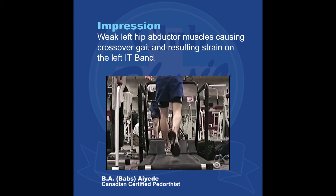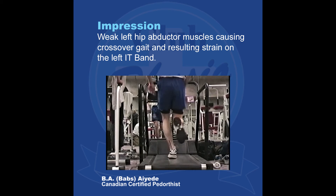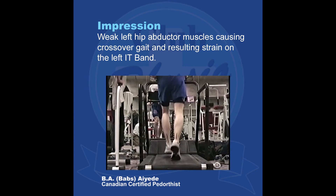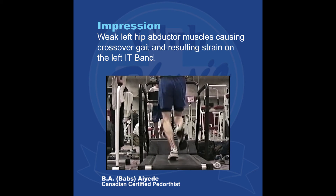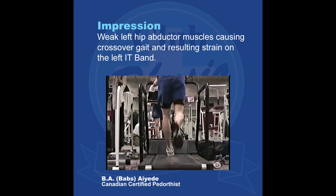The impression from the assessment was that hip muscle weakness was contributing to the crossover gait, resulting in increased load on the IT band.